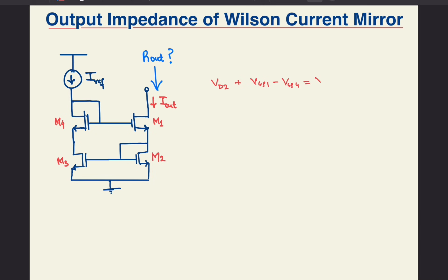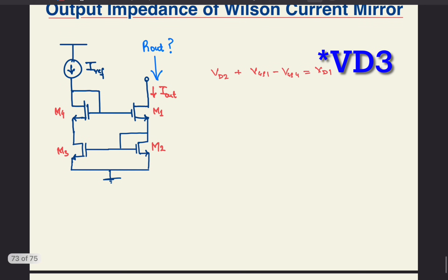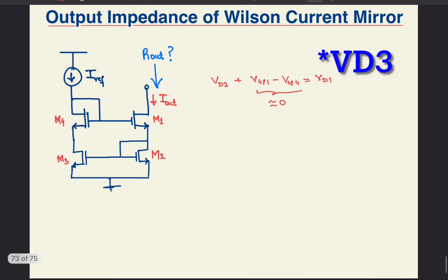Also, the drain voltage relation for M2 and M3 can be expressed as VD2 plus VGS of M1 minus VGS of M4 is equal to VD3, which is the drain voltage of M3. VGS1 minus VGS2 is approximately zero, so that's how the system equalizes the potential difference between the drains of M2 and M3.